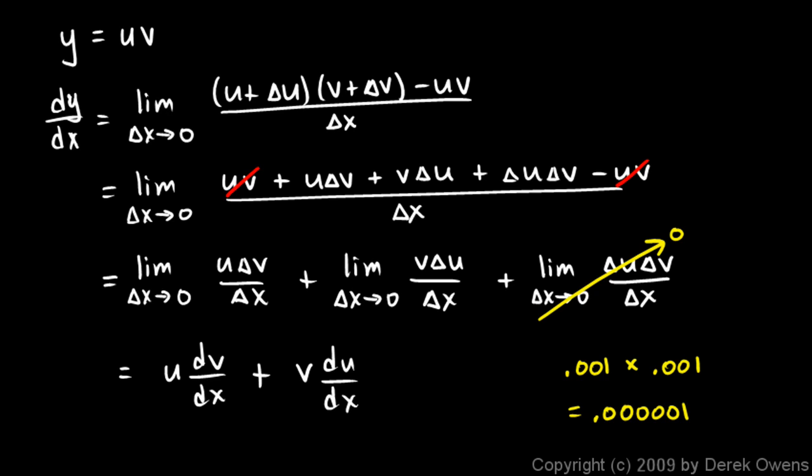So multiplying two tiny things together results in something very tiny. And in this expression right here, delta x is getting really small, but delta u and delta v are also getting really small.